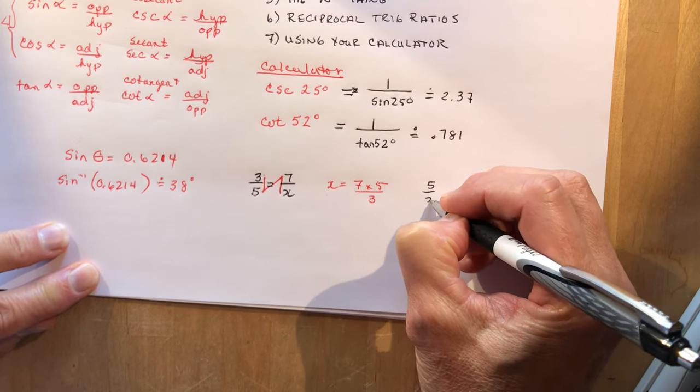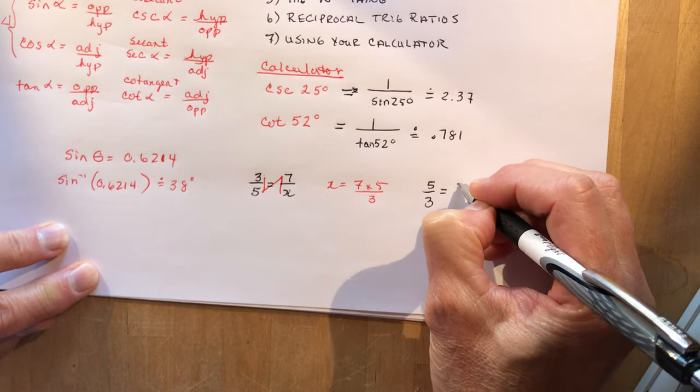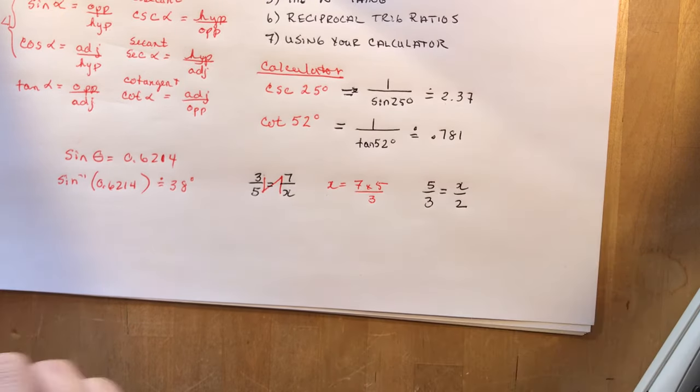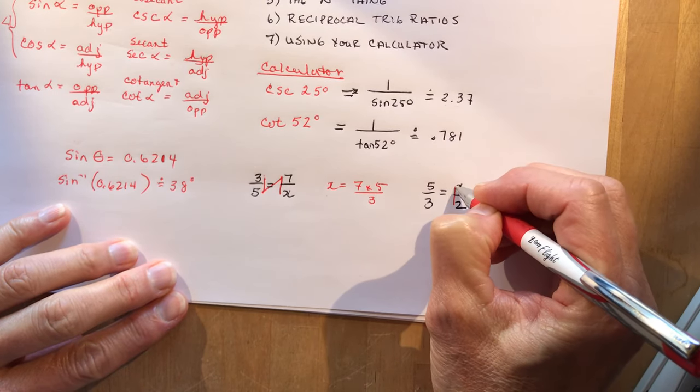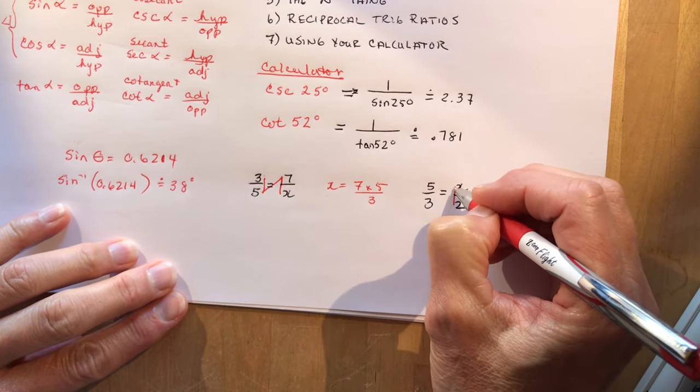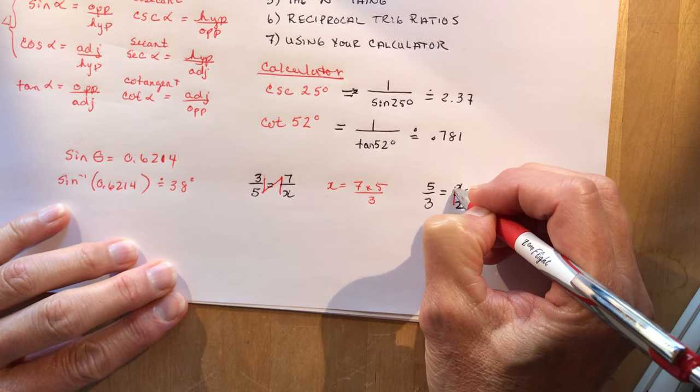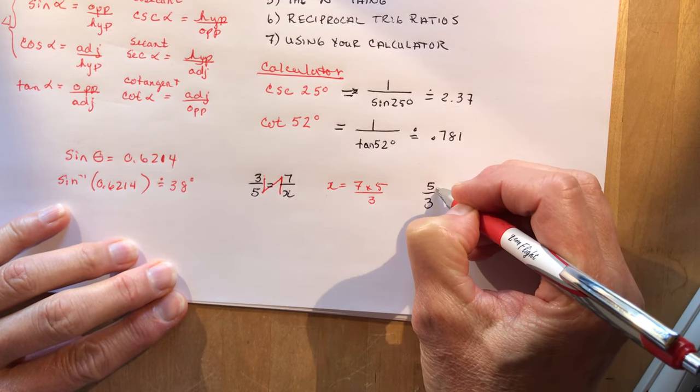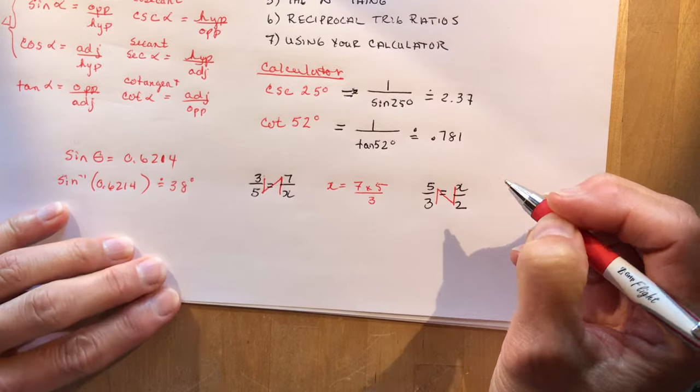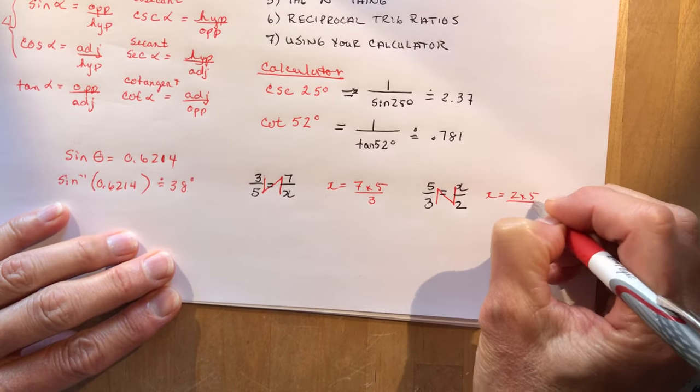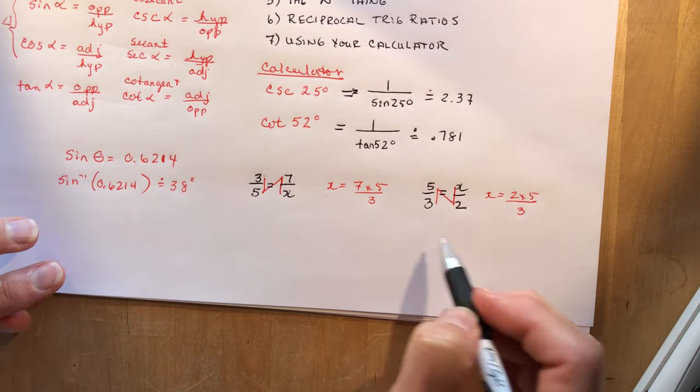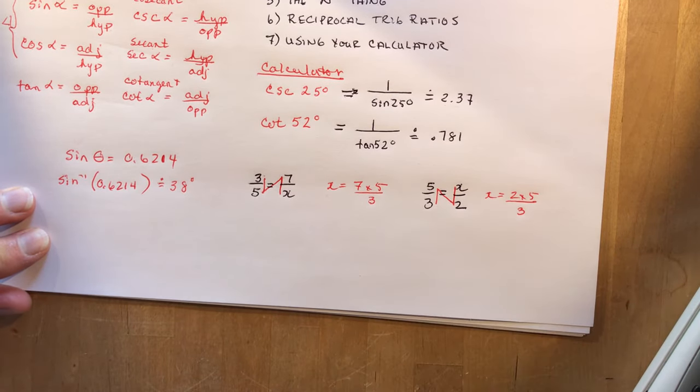Let's do one where it's in a different position. So let's say 5 over 3 equals x over 2, and I want to solve for x. So again you go down this time, because I have to go up or down to start. So that means x is equal to 2 times 5 divided by 3. All in one step, x equals 2 times 5 over 3. So that's how you use this in order to solve all your little ratios for trigonometry.